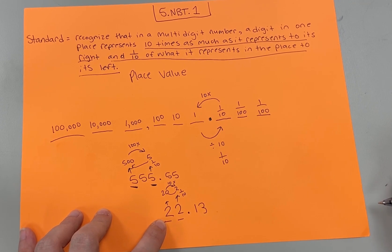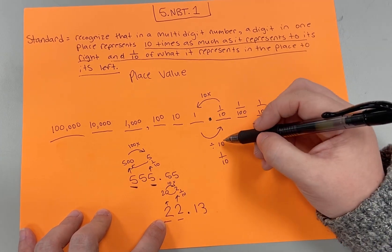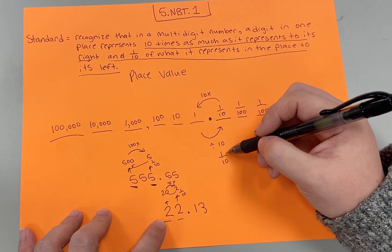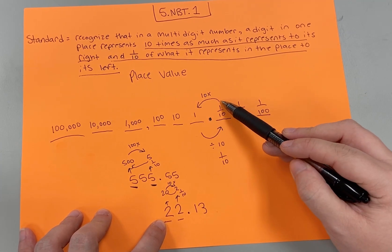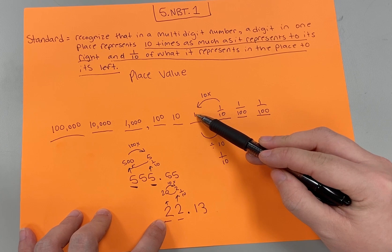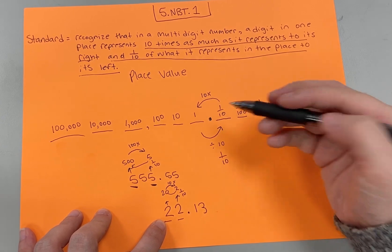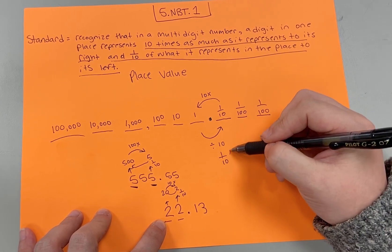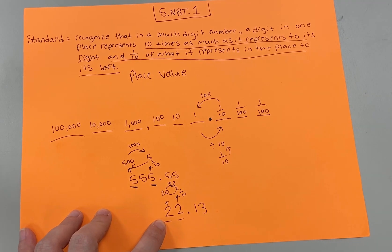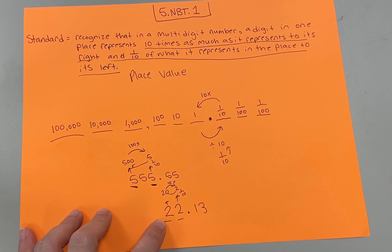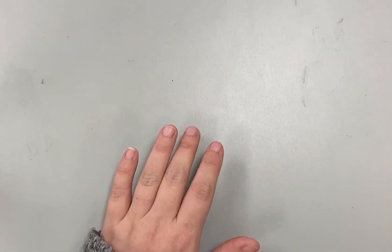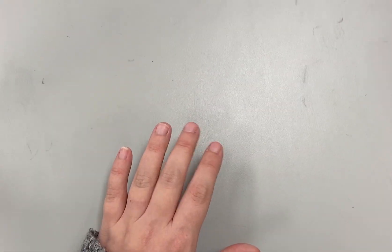It's important that students understand the relationship between the left being ten times bigger and the right being one-tenth smaller, and connect that to division and multiplication. It's very important. Now I'm going to show you some sample items that are going to be on their state test.